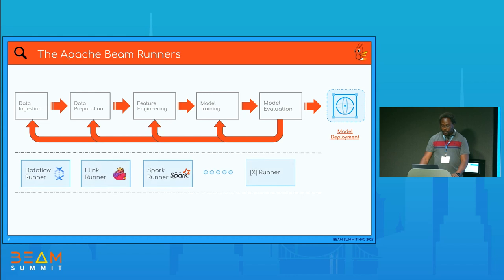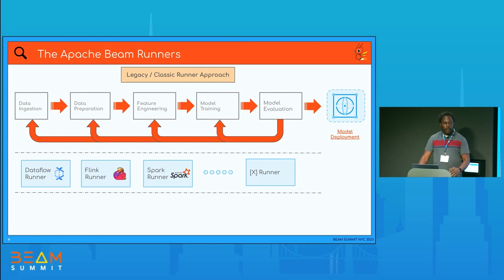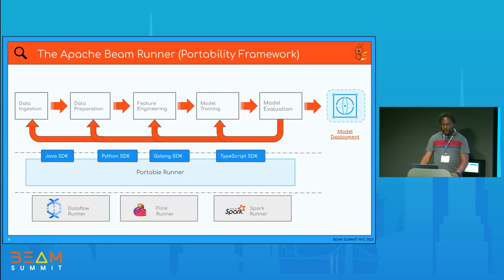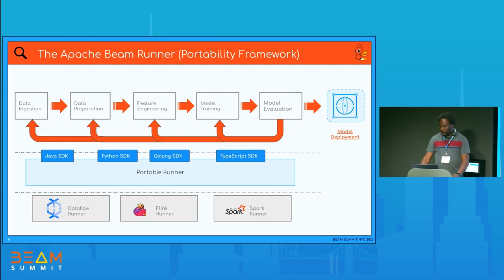From the runner perspective, Beam can natively run on all these runners. One challenge Beam has solved is the portability implementation that lets you quickly target any runner. By default there was the legacy classic approach, which made it difficult to port code to all runner implementations. The portability framework now allows you to connect to SDKs — Python SDK, Go SDK, TypeScript, Rust — and those SDKs let you port to any of the runnable infrastructures.